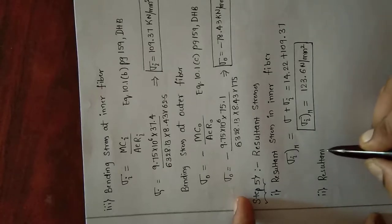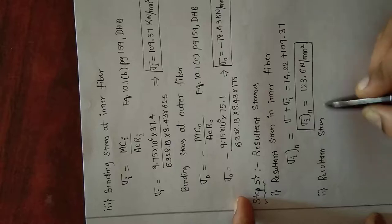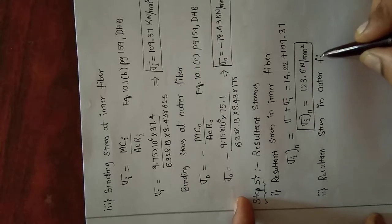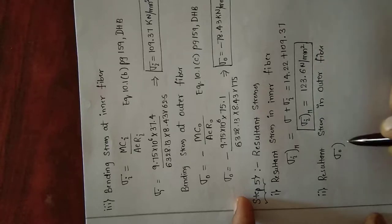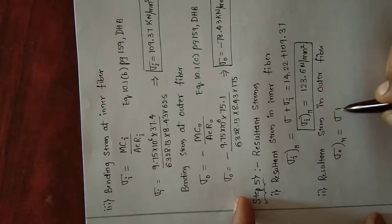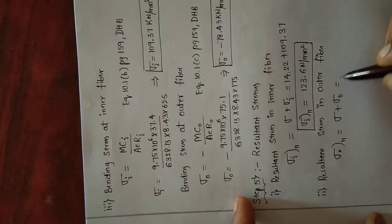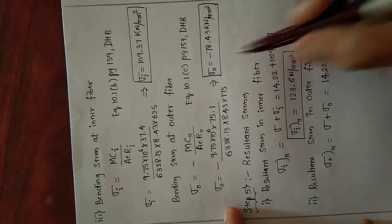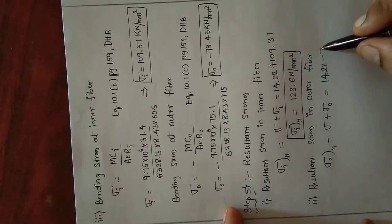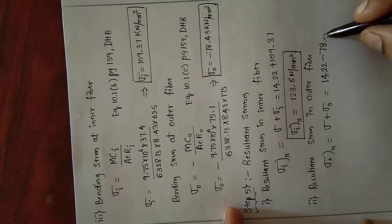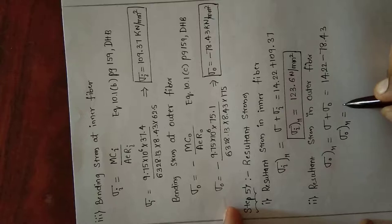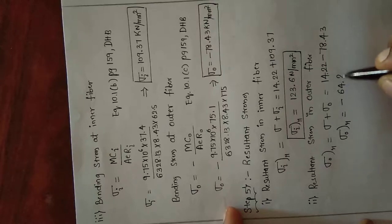Resultant stress in outer fiber: sigma-0-r equals sigma plus sigma-0. Sigma is 14.22 but sigma-0 is a negative value, minus 78.43. So sigma-0-r equals 14.22 minus 78.43, giving sigma-0-r equal to minus 64.21 N/mm square.